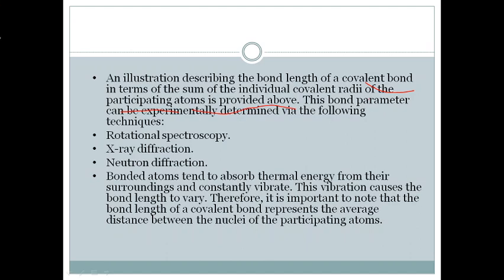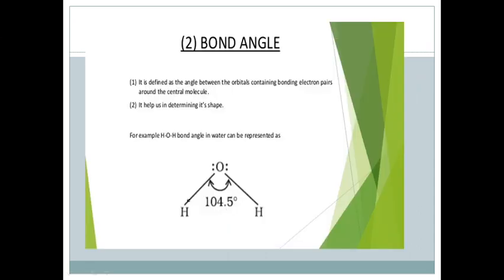Now, bond angle. It is defined as the angle between the orbitals containing bonding electrons around the central molecule or central atom. The central atom is very important, and the angle between the orbitals with bonding electron pairs.